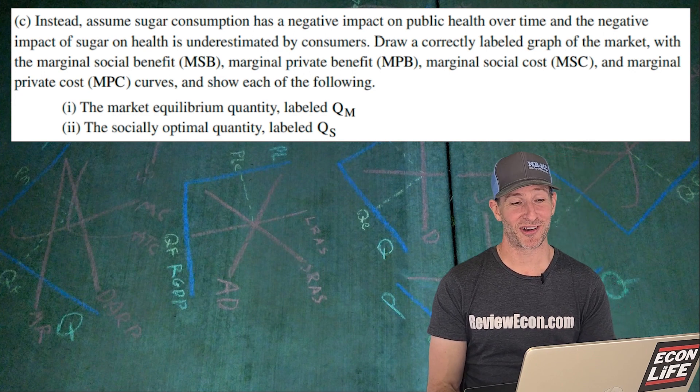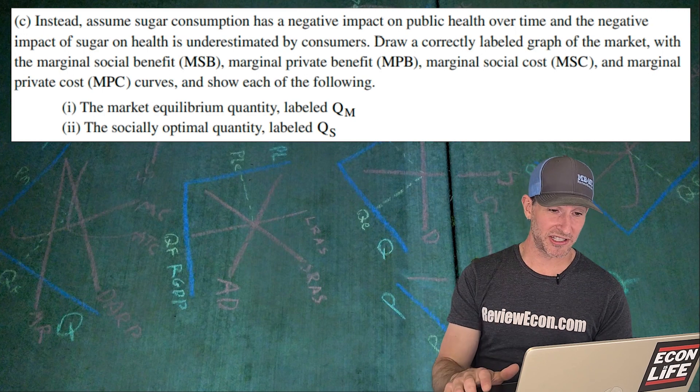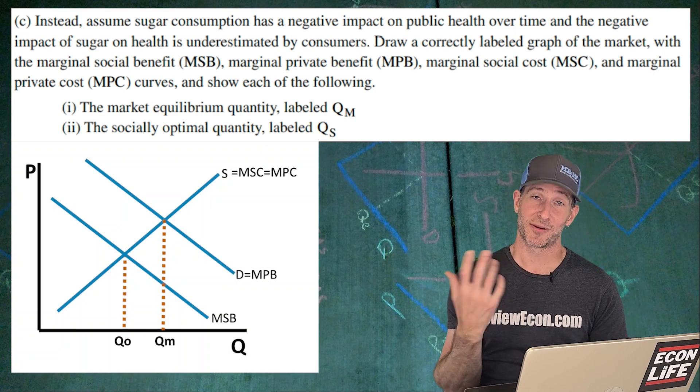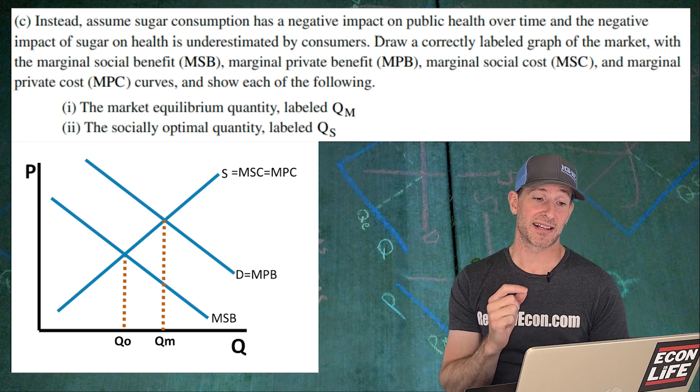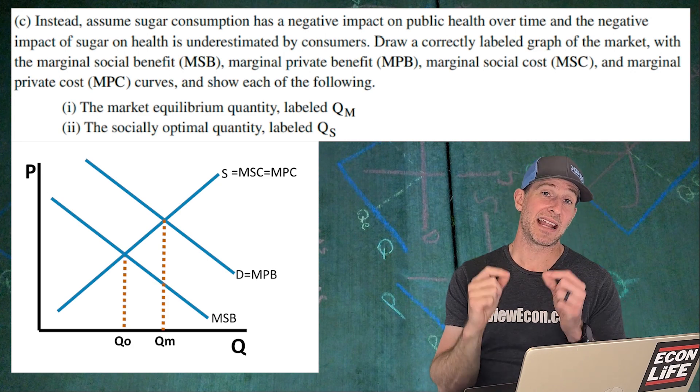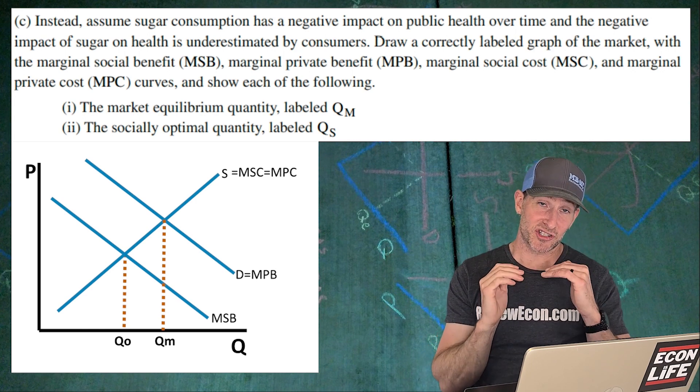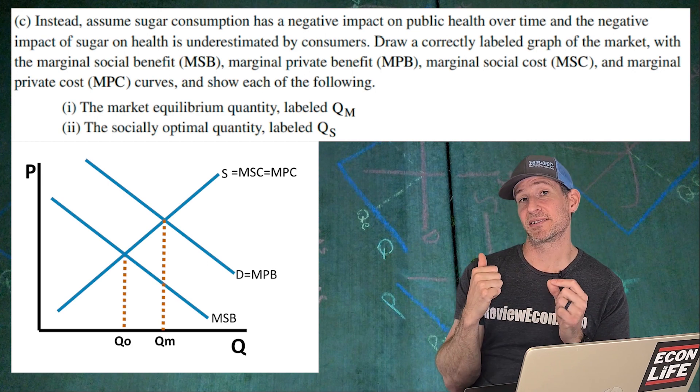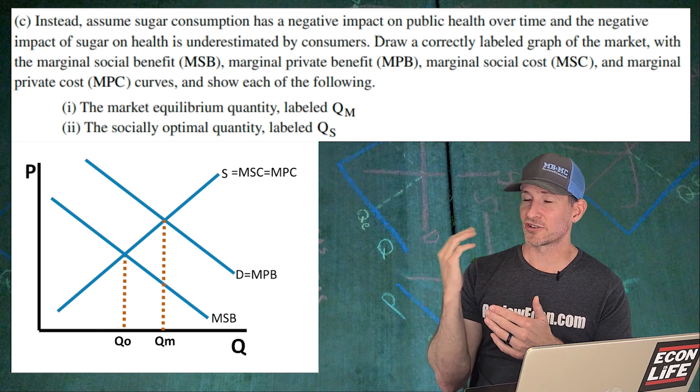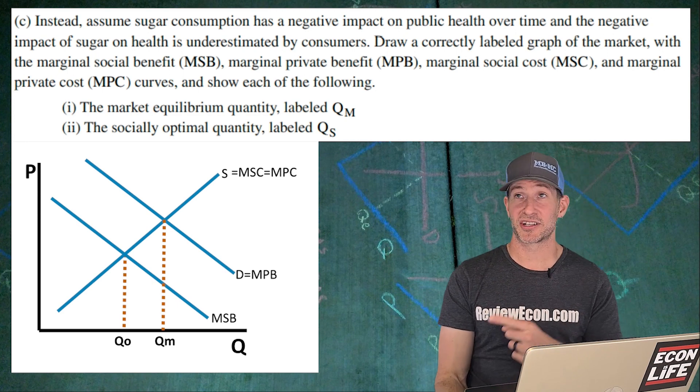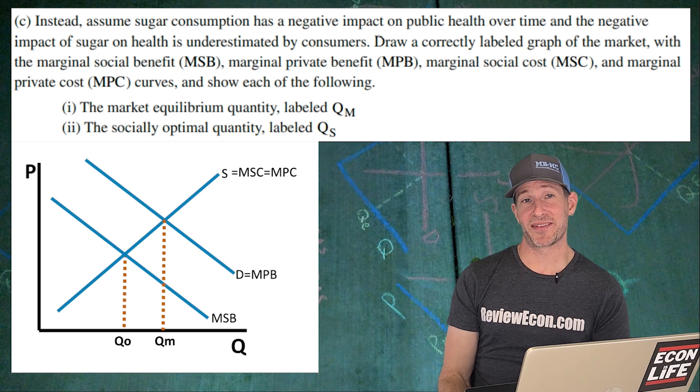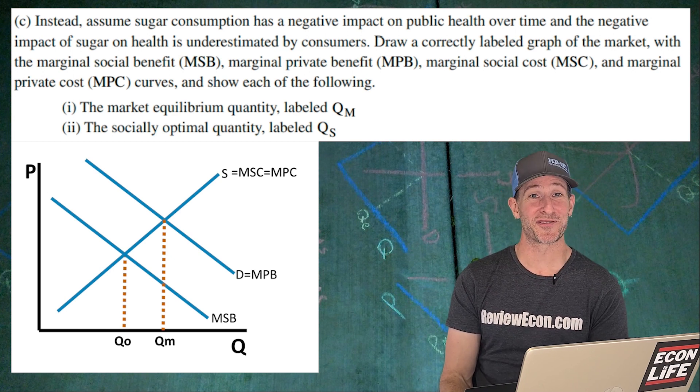What you should do is you would have to mark the market quantity QM and the socially optimal quantity QS. Here's what it looks like. We have a downward sloping demand curve. We have an upward sloping supply curve. The supply curve is that marginal social cost and the marginal private cost, and the downward sloping demand curve is the marginal private benefit. But since we have a negative externality, we're going to subtract the external cost from the demand curve because this is a negative externality in consumption. So that's the way they draw it. They subtract it from the demand curve here or the marginal private benefit to get that marginal social benefit. And it's at the intersection of the marginal social benefit and the marginal social cost curve is where we get QO. So this is the first time they've ever had people draw this. I was thrown for a loop as well. I did not expect this.